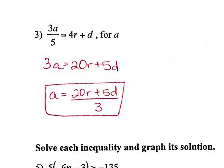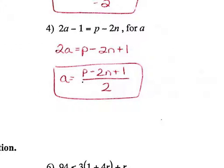Question 3: just like question 2, we have to get rid of the fraction first, so I multiplied everything by 5 — every single term including each term on the right side. That gave me 20r plus 5d. On the left, the 5s canceled so you're left with 3a. To get a by itself, divide both sides by 3. Question 4: I'm trying to get a by itself. The 2 and a are connected by multiplication, so that's last. I got rid of minus 1 by adding 1 to both sides, giving p minus 2n plus 1, then divided both sides completely by 2.